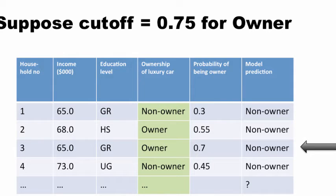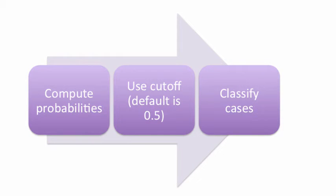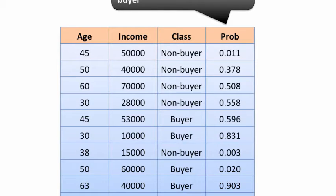If you had a cutoff of 0.75, you're putting a really high bar for somebody to be classified as an owner, so you may not classify anybody as an owner. On the other hand, a lower cutoff gives you more owners. What you choose as the cutoff depends on your particular situation. The classification process is: compute the probabilities, use the cutoff (default is usually 0.5), and classify the cases. R or Excel Miner will do the computations for us.